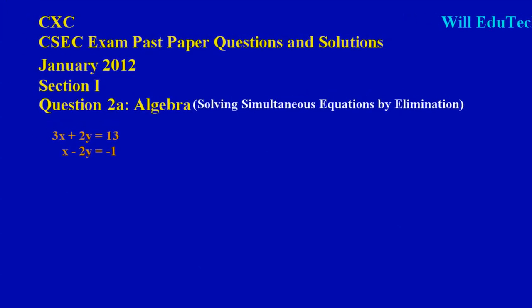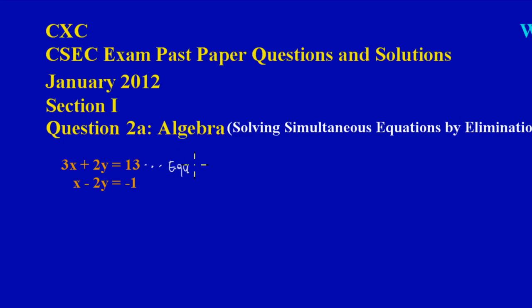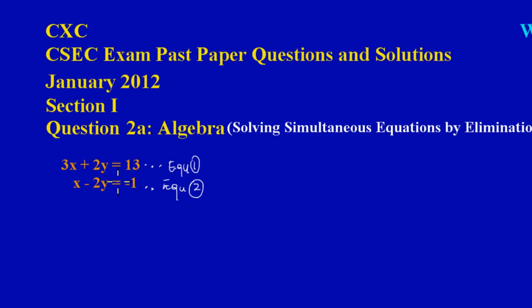Equation one is my first equation, and equation two is my second. If you notice carefully, in equation one I have 3x plus 2y equals 13, and in equation two I have x minus 2y equals negative 1. Notice that the coefficient — the number before y — is the same in both equations: positive 2 in equation one and negative 2 in equation two. When you have this situation, the coefficient on the variable is the same but the signs are different.